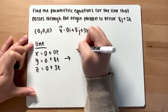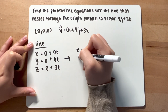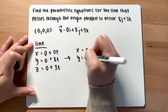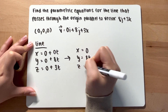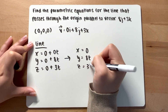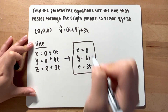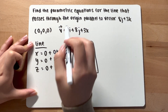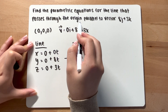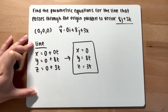Simplified, you have x equals 0, y equals 8t, and z equals 3t. So this would be the parametric equations for a line that passes through the origin and is parallel to the vector 0i plus 8j plus 3k.